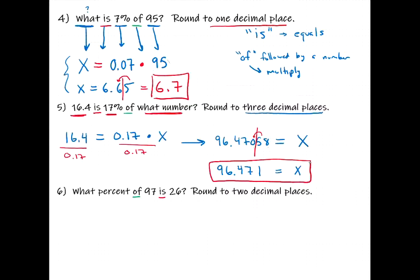We've solved for the part in number four, the whole in number five, and now we're solving for the percentage in number six: 'What percent of 97 is 26?' The word 'what' is the unknown, and since it's a percentage, x represents percent — which is x over 100. So we can't just use x; we have to use x over 100. The equation becomes: x over 100 times 97 = 26.